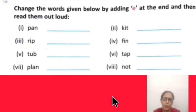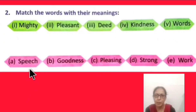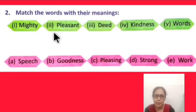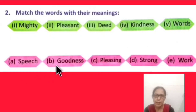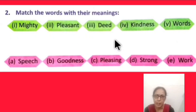Now you will try to write these words in your book. Next exercise: Match the words with their meanings. Words are shown in green color and meanings are given in pink color. Match the words with their meanings.